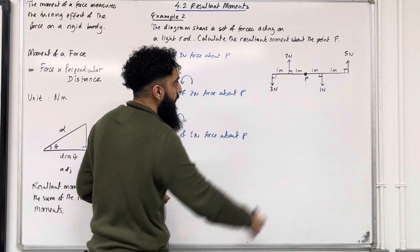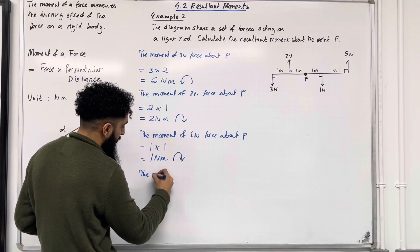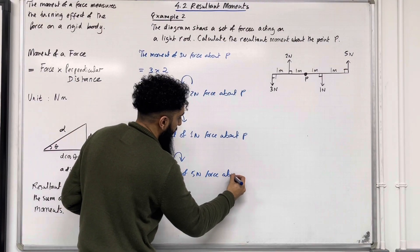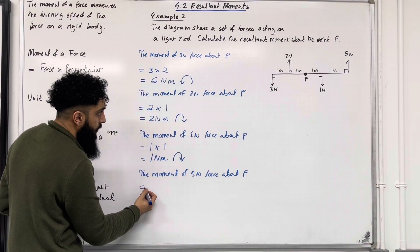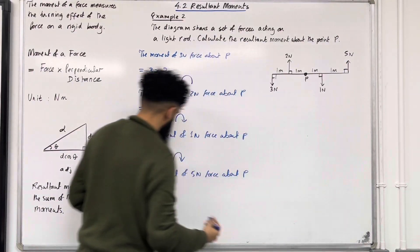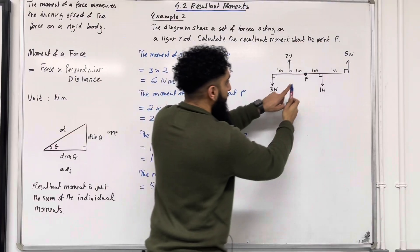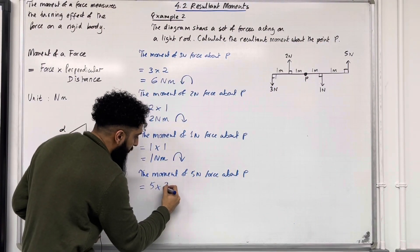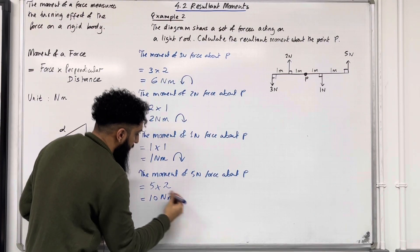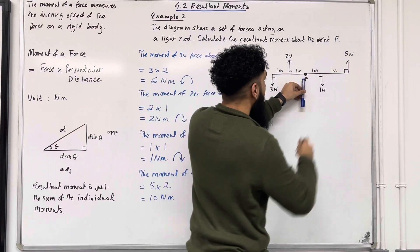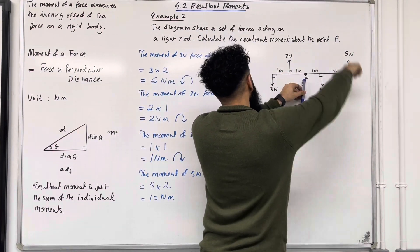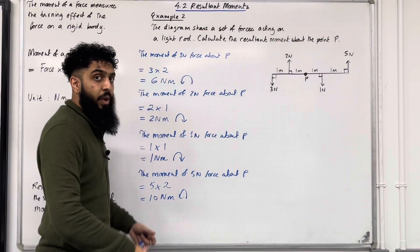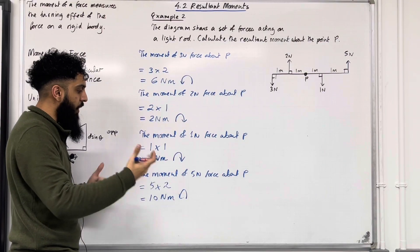Finally, the moment of the 5 newton force about P equals 5 multiplied by the perpendicular distance from P, which is 2 meters. So 5 multiplied by 2 is 10 Newton meters. If I hold on to point P and apply this force, it will take the entire body anti-clockwise. So we have 10 Newton meters going anti-clockwise.